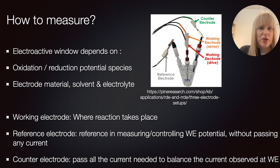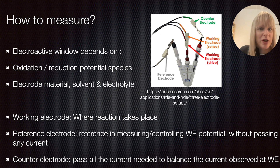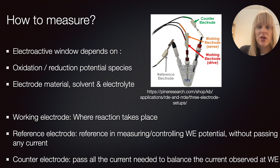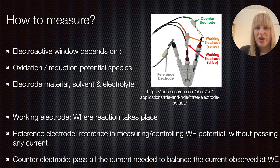The counter-electrode is also important because it needs to close the system — it passes all the current needed to balance the current observed at the working electrode. One of the fiddly things is that these three different electrodes can't touch each other, otherwise you get a short circuit. So you might want to work with a specifically designed custom glass cell. Alternatively, I work with screen-printed electrodes where you can have the reference and counter-electrode integrated onto the system itself, which makes it easier to go smaller. In that case, you can measure drops of liquid, which is important for sensing real samples at very small volumes.